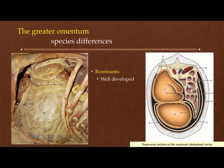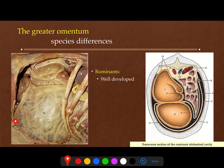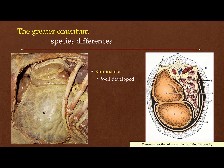Ruminant animals have a very well-developed greater omentum. The greater omentum in ruminants, as we will study in detail, is very well developed and covers most of the structures. On the right side in this view, only the descending duodenum is visible, and most of the viscera are covered by the greater omentum.